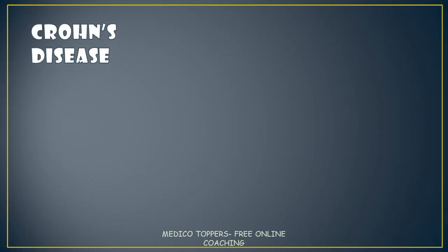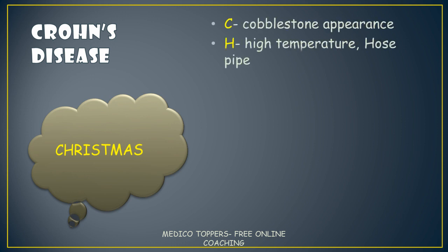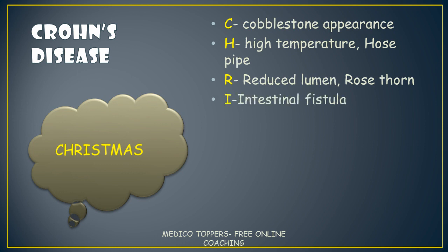First is Crohn's disease. Just think that Crohn's is a person going to celebrate Christmas. The mnemonic: C for cobblestone appearance, H for high temperature and hosepipe appearance, R for reduced lumen and rose thorn appearance, I for intestinal fistula.